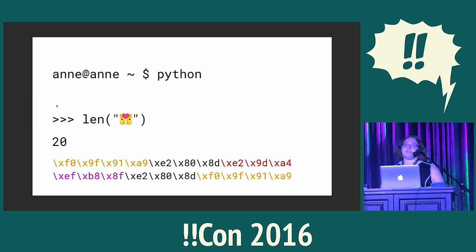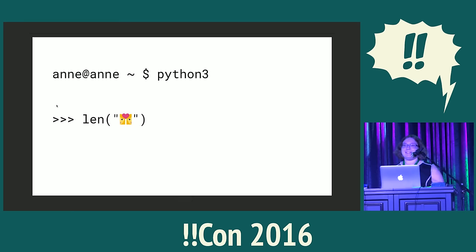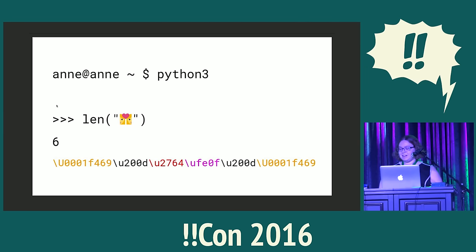Python also has the concept of a Unicode string, which is actually the default type of string in Python 3 onwards. So let's try this again — how long is this string? A lot of people seem to think it's three; I hear five, two. The correct answer is six. There are six Unicode characters in this string: woman one, zero-width joiner one, heart, a variant selector for the heart which says we want the emoji display of it, zero-width joiner two, and finally woman two.